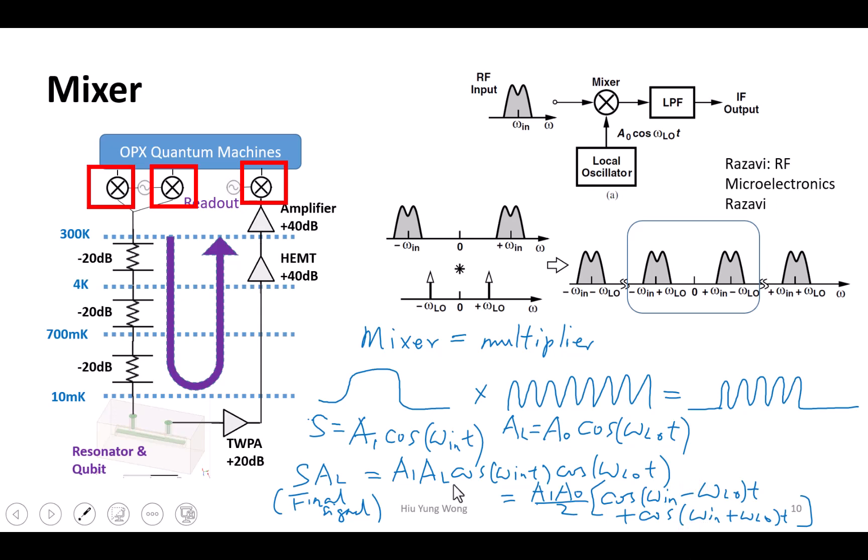Imagine if they are very close. Let's say this is 900 megahertz, this is 1 gigahertz. Then you will get 1.9 gigahertz and also 0.1 gigahertz. One very low frequency, one high frequency. That is what it is talking about here.